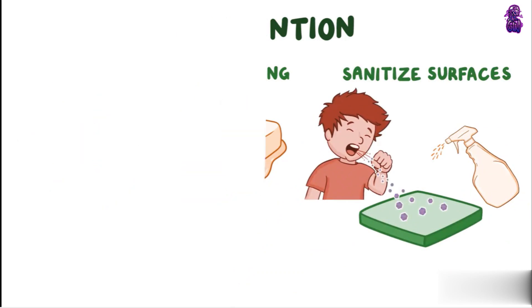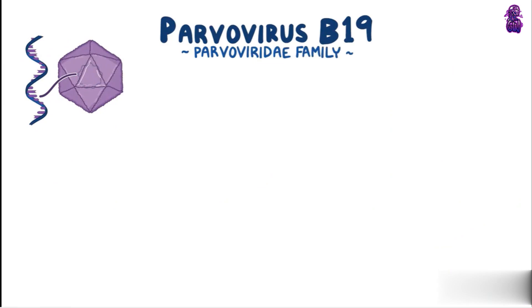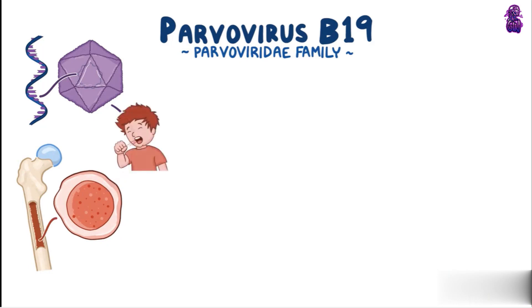As a quick recap: Parvovirus B19 is a single-stranded DNA virus of the Parvoviridae family. It infects and replicates in erythroid progenitor cells in the bone marrow. Viral replication results in apoptosis of infected cells. It's transmitted by respiratory droplets.